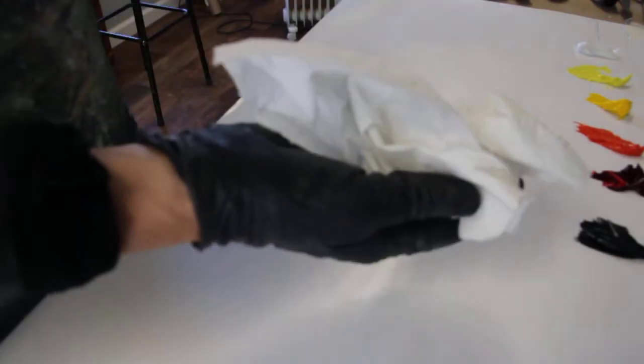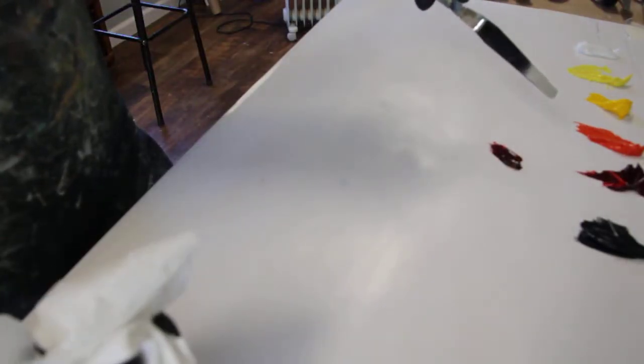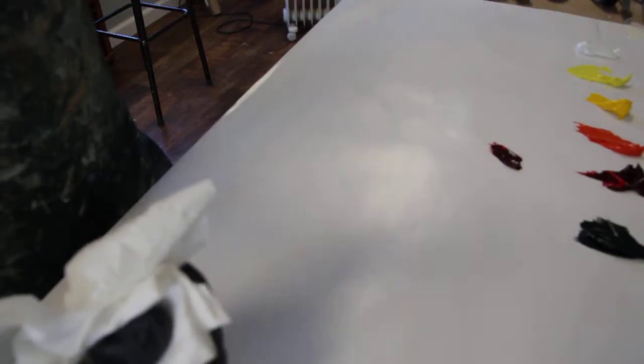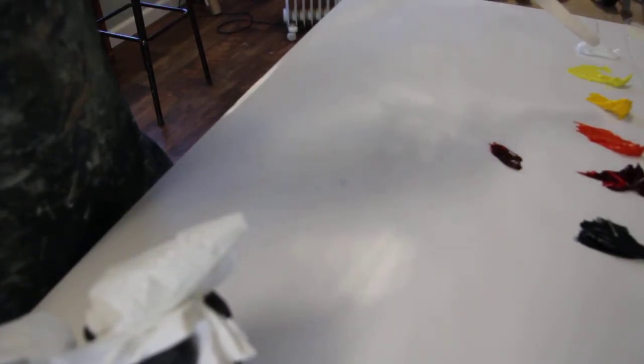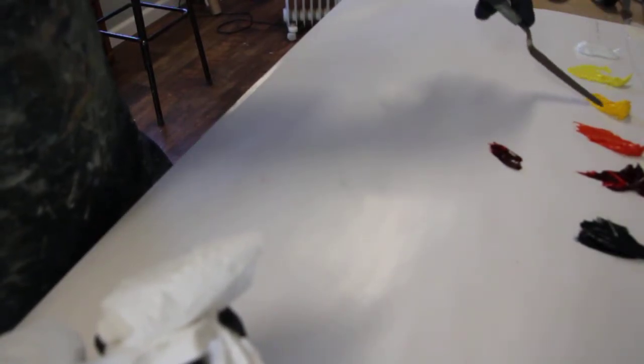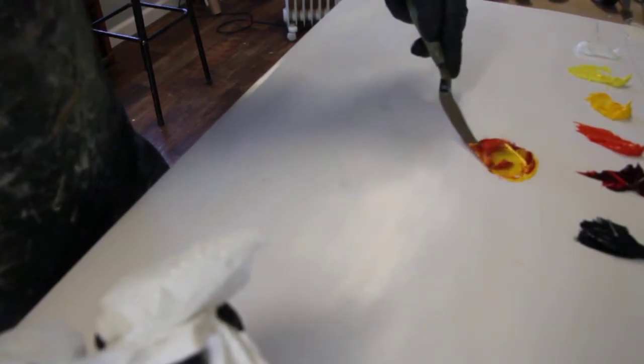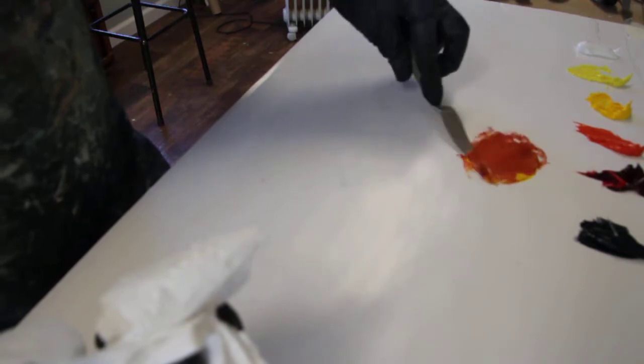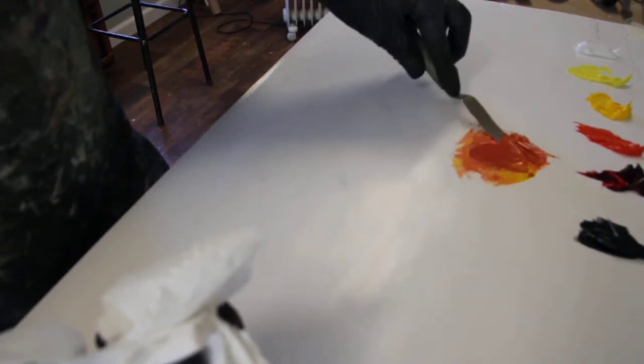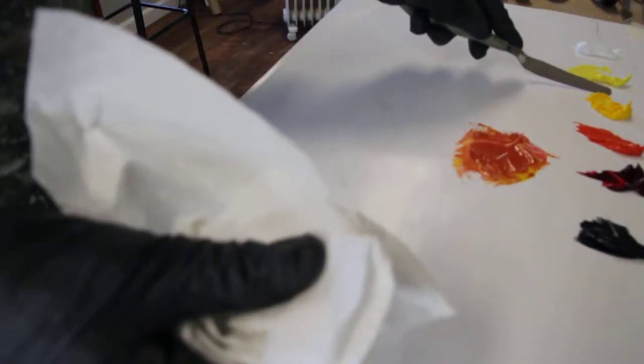So I'm going to start with alizarin crimson and I wipe off my palette knife with every swipe of the color so that I don't dirty the other colors. And then I'll take my warm yellow, mix those in. It's a little strong on the red, add a little more of this.